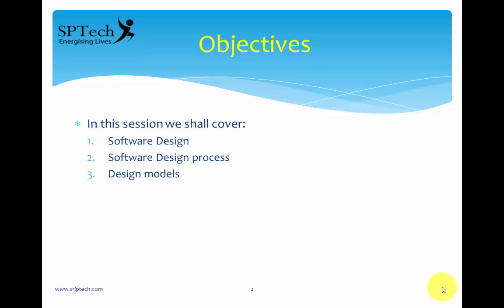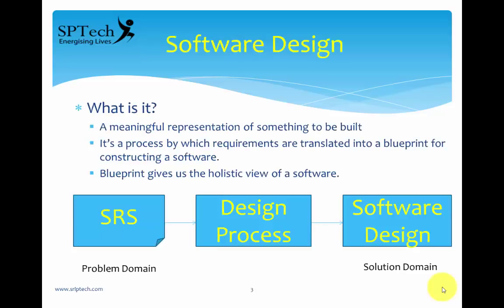What are we going to cover in this chapter? We will talk about software design, look into the design process of software, and also throw some light on design models. So what exactly is software design? As you can see from the slide, it is a meaningful representation of something to be built. It is basically an intermediary stage between the analysis and the actual software being developed.